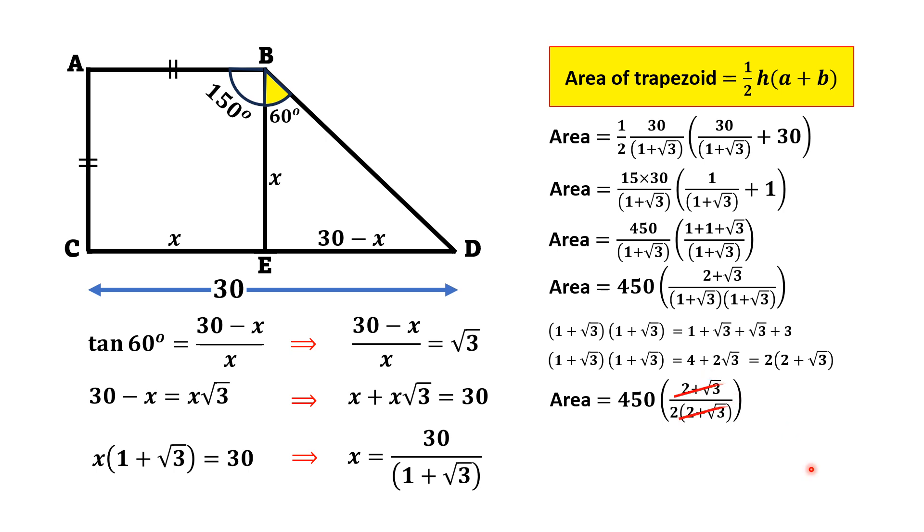This factor in the numerator and denominator is the same and will cancel out, and thus area of trapezium will be 450 divided by 2, which is equal to 225 square units. And that is the answer. Thank you for watching.